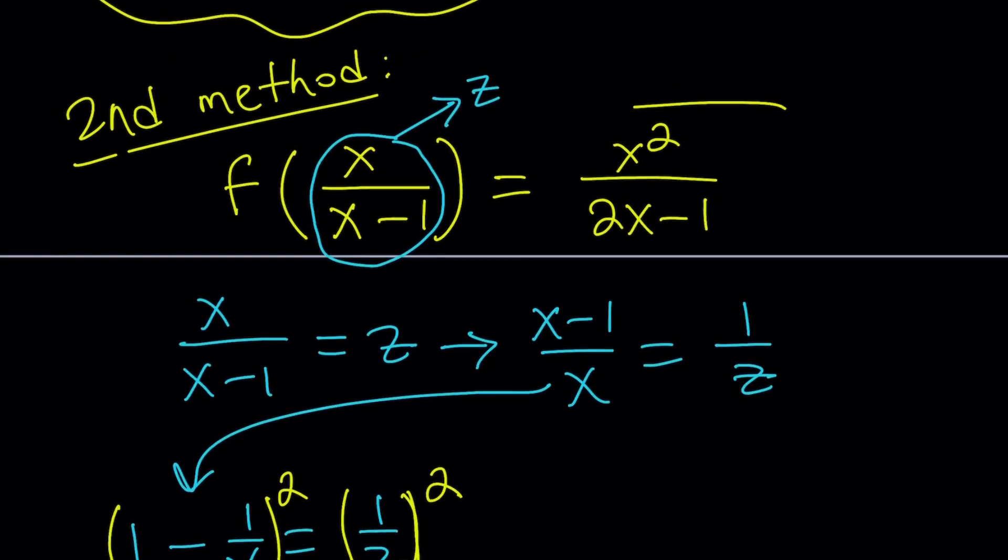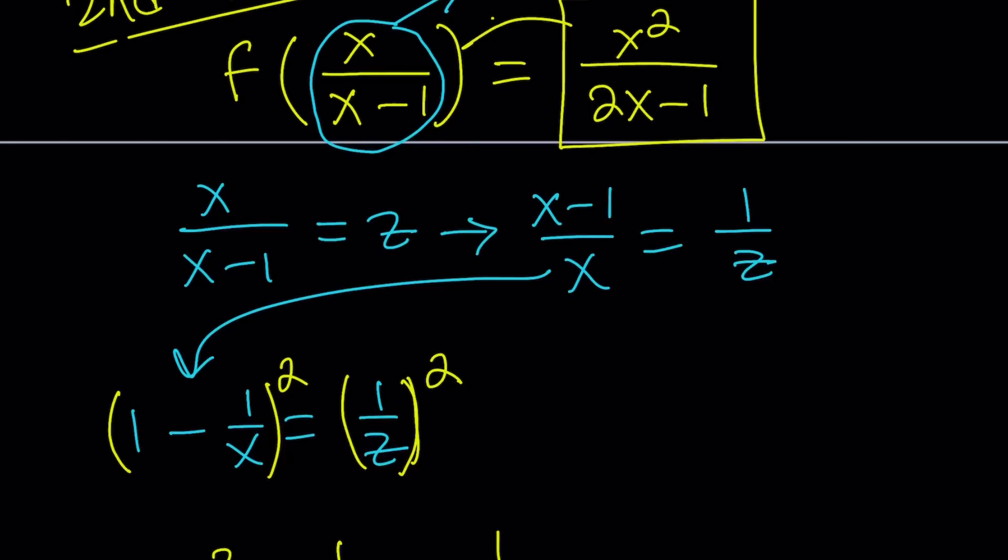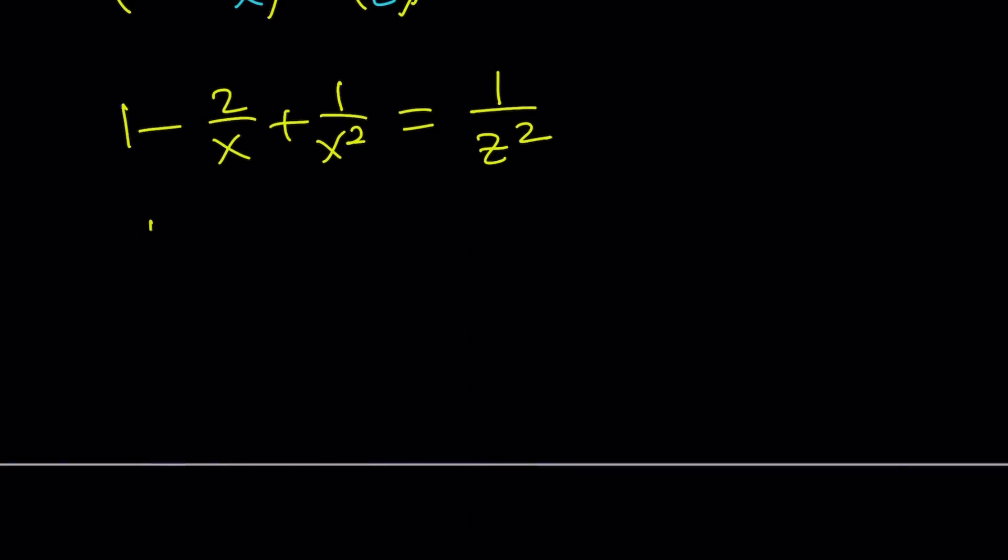Now, notice that my expression looks like this. x squared over 2x minus 1. So, that's special. And it's actually connected to this, but we've got to do a little bit of work. So, I'm going to do the following. I'm going to make a common denominator for these two terms. That's x squared. So, that's 1 minus 2x. If I multiply this by x and that by x, then I'll get it. And I'm going to write it this way. You'll see in a little bit why it's helpful.